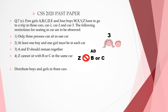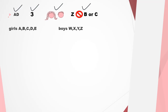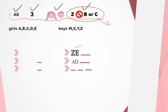Five girls A, B, C, D, E and four boys W, X, Y, Z have to go on a trip in 3 cars — Car 1, Car 2, and Car 3. The following restrictions are to be observed: only 3 persons can sit in one car; at least 1 boy and 1 girl must be in each car; A and D should remain together; Z cannot sit with B or C in the same car. This condition creates a limitation for Z: either Z will be with E, or Z will be with A and D, because Z cannot be with B or C.